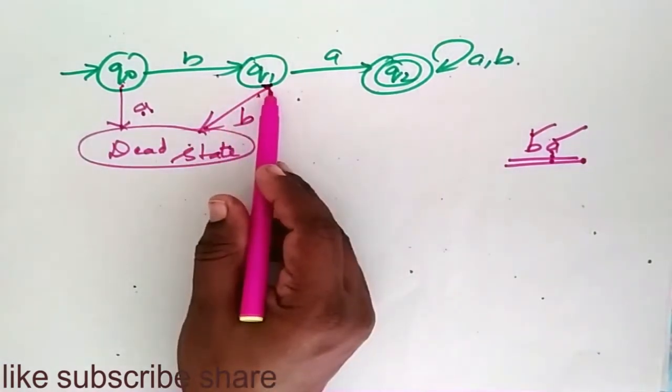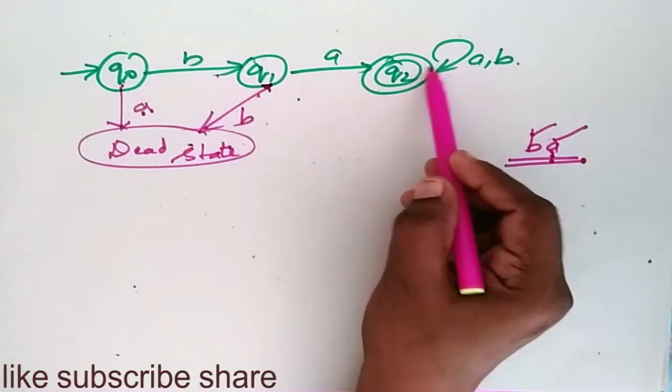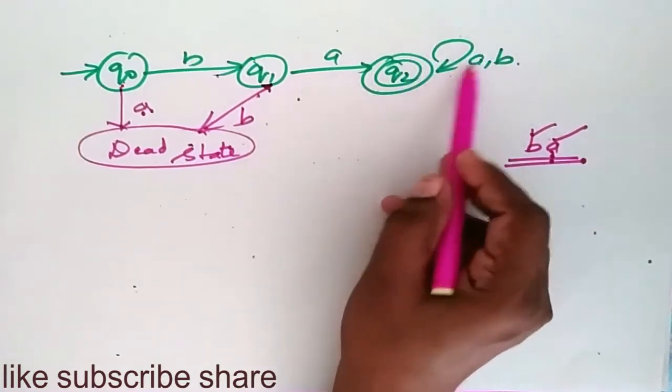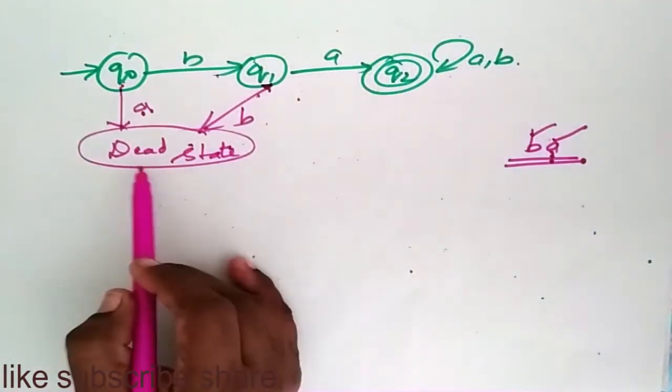If it accepts B, it should move to the dead state. In the next, it can accept any number of A's and any number of B's.